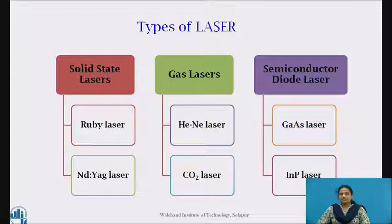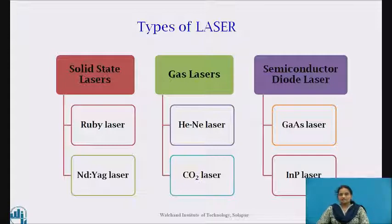Lasers are classified into different types based on different considerations. Usually, we divide them on the basis of the material used. Some important types are: solid-state lasers, which include ruby laser and Nd:YAG laser; helium-neon laser and carbon dioxide laser are examples of gas lasers; and gallium arsenide and indium phosphorus are semiconductor diode lasers. Most lasers emit light in the red or infrared regions and work in either continuous mode or pulsed mode.